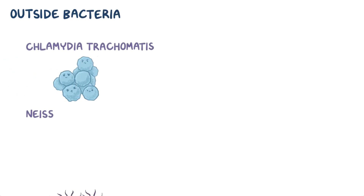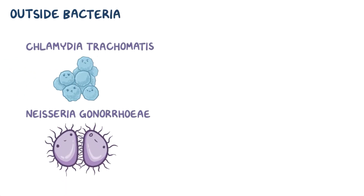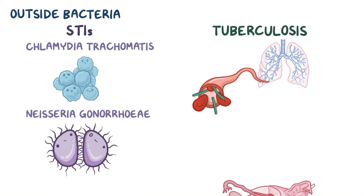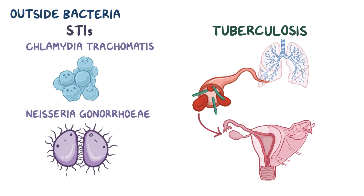Finally, endometritis can also be caused by outside bacteria, like Chlamydia trachomatis or Neisseria gonorrhoeae, which are sexually transmitted infections. Also, some cases of endometritis can occur in a female with tuberculosis, in which Mycobacterium tuberculosis spreads from the lungs into the blood and travels to other organs like the uterus.